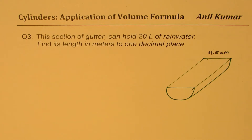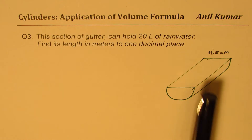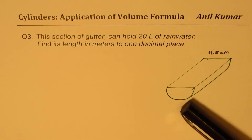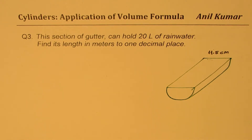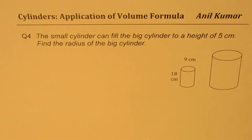Question number three: this section of gutter can hold 20 liters of rainwater. Find its length in meters to one decimal place. The width is 11.5 and we need to find the length — it is like a semi, half of a cylinder. Question number four: the small cylinder can fill the big cylinder to a height of 5 centimeters. Find the radius of the big cylinder. These are actually good application questions on volume of cylinders.